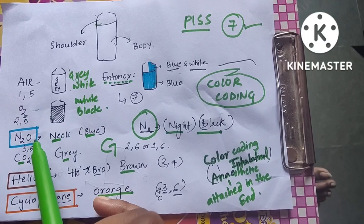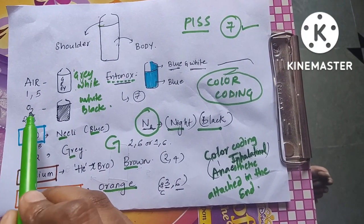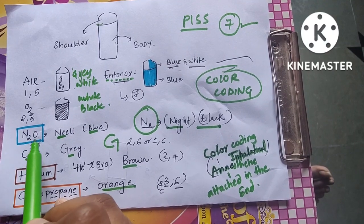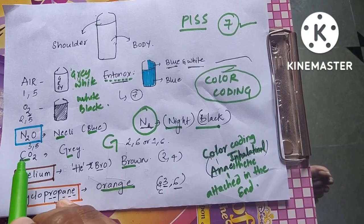Now let us discuss the pin index of different systems. For air it is 1,5. Oxygen has two, so 2,5. Nitrous oxide has three elements - two N's and one O - so 3,5. Carbon dioxide, you can make six out of C, right? So it is 2,6 or 1,6.